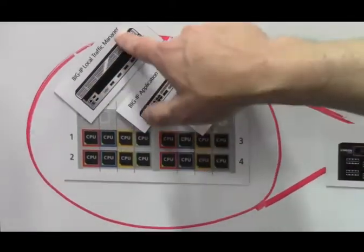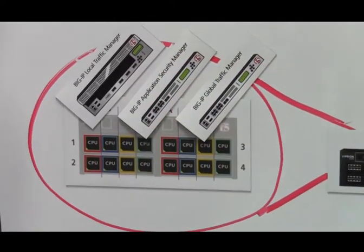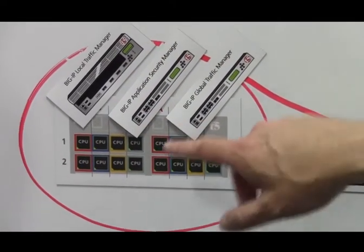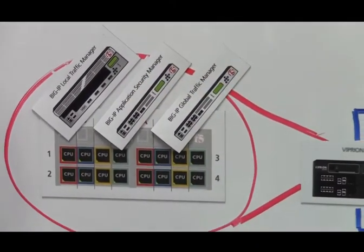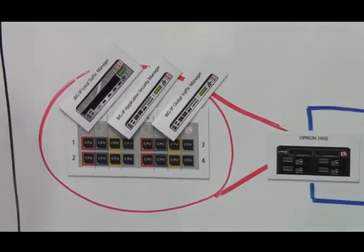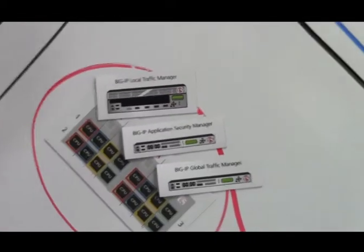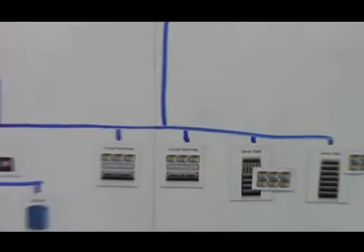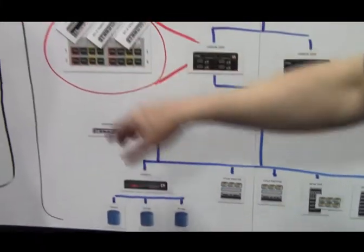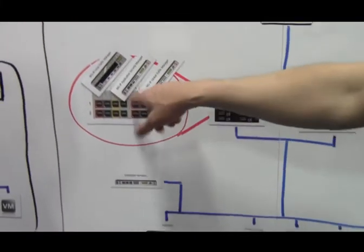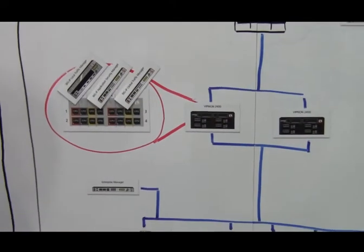You can see here we have one instance running Local Traffic Manager, another one running ASM — our security manager — and another one running our Global Traffic Manager. You can also see multiple apps running on multiple different physical and virtual machines, and you can split those up so that different apps are on different instances.